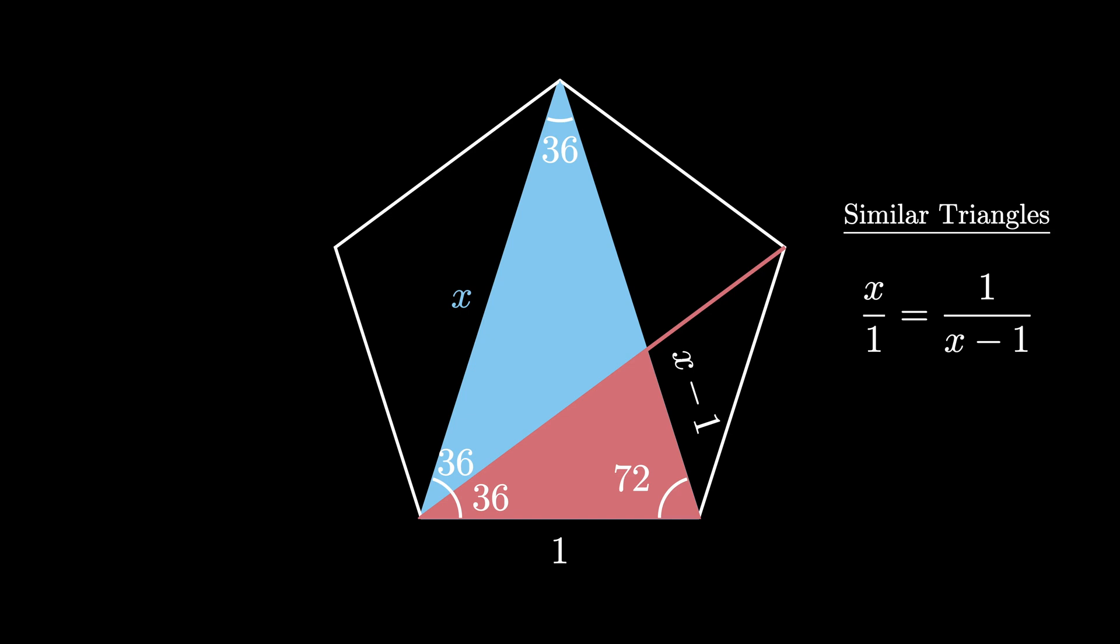Now when we clear denominators, we get that x times x minus 1 equals 1, and this means that x squared minus x minus 1 is equal to 0.